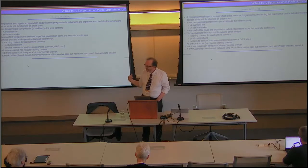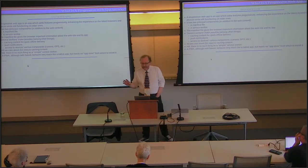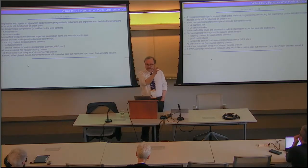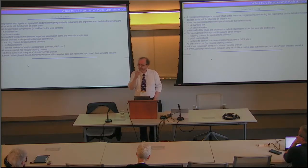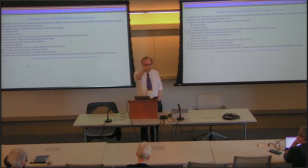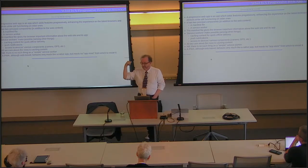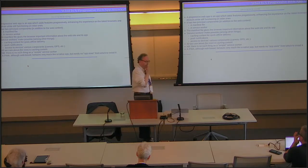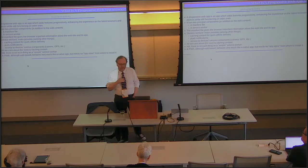There are two things about a progressive web app. The first is a manifest file. If you've ever made a Chrome app or an ebook, you're probably familiar with the manifest file. It's a JSON file with keyword-value pairs — a very simple thing. I'll show you the manifest that goes with this app in a moment.